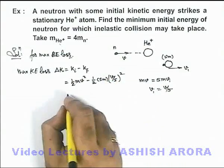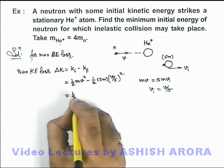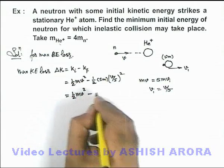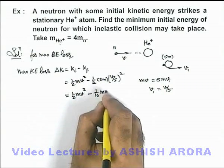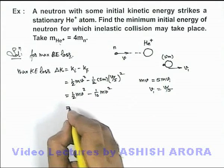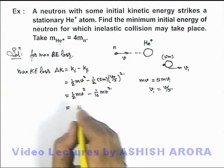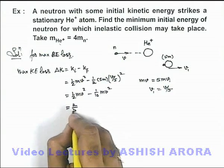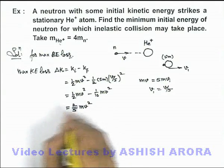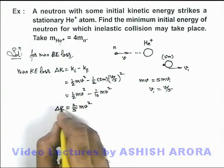On simplifying, this is half mv squared and the second term here becomes 1 by 10 mv squared. On further simplifying, we get 4 by 10, this is 2 by 5 mv squared. This is the maximum loss in kinetic energy.